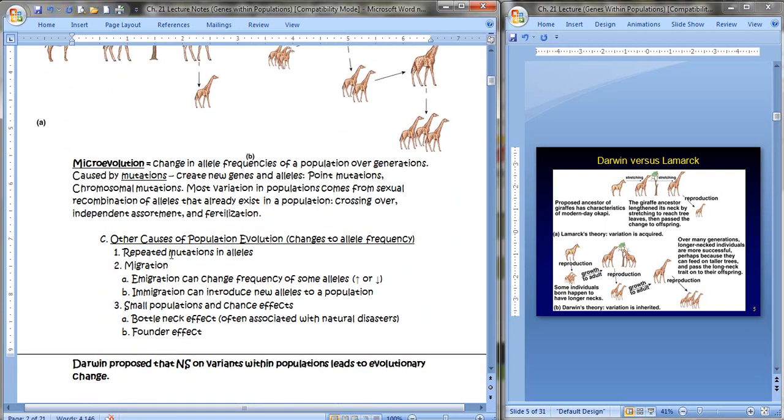Some other causes of population evolution, repeated mutations and alleles, migration, either emigration, if that's when organisms leave their population, that can change the frequency of some alleles, either increasing or decreasing. Immigration, an individual coming into a population, could introduce new alleles to a population, and small populations and chance effects. We'll talk about bottleneck effects and founder effects, which we've discussed in the past.